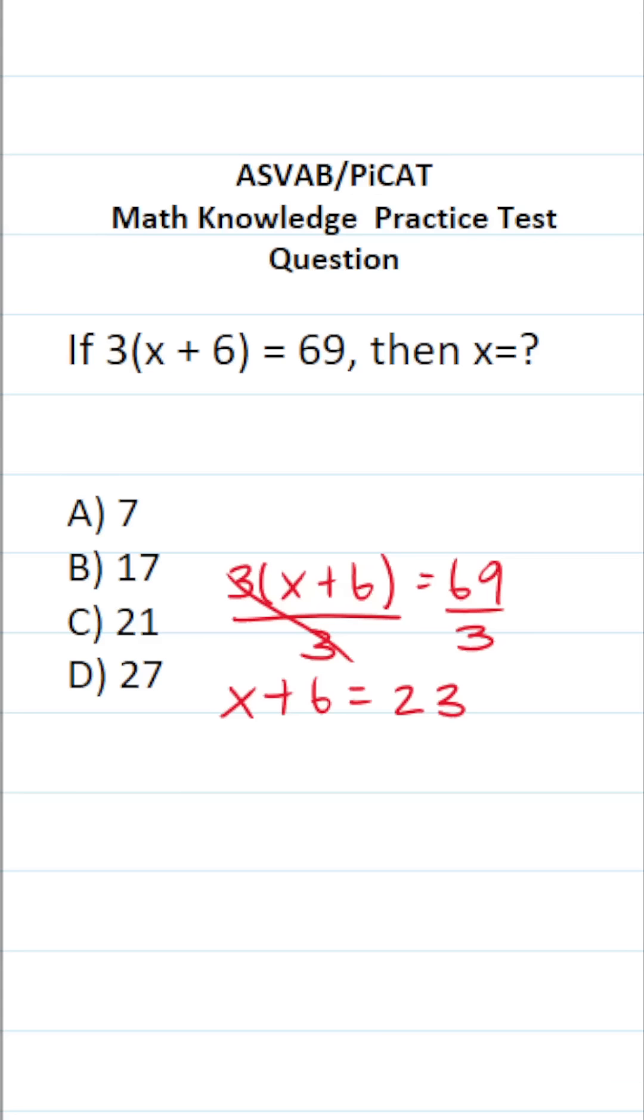So we have x plus 6 equals 23. To get x by itself, we're going to subtract 6 from both sides. This gives us x equals 23 minus 6, which is 17.